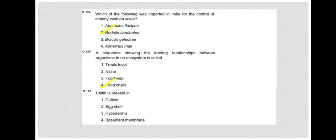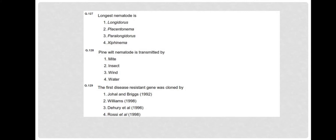Question 126: Chitin is present in the cuticle. Chitin is a polymer of N-acetyl-beta-D-glucosamine, a major component of insect cuticle that determines its mechanical properties. Question 127: The longest nematode is Paralongidorus. Paralongidorus maximus is the longest plant parasitic nematode. Question 128: Pine wilt nematode is transmitted by insect. That is Bursaphelenchus xylophilus causing pine wilt disease, transmitted by the pine sawyer beetle, a Monochamus species.